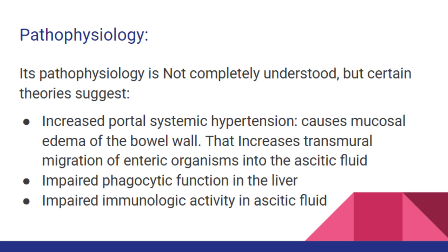Pathophysiology. Its pathophysiology is not completely understood, but certain theories suggest increased portal systemic hypertension causes mucosal edema of the bowel wall that increases transmural migration of enteric organisms into the ascitic fluid. Additional factors include impaired phagocytic function in the liver and impaired immunologic activity in the ascitic fluid.